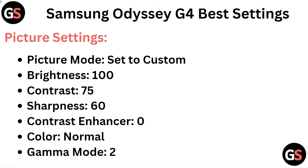Picture Settings: Picture Mode set to Custom. Brightness 100, Contrast 75, Sharpness 60, Contrast Enhancer 0, Color Normal, Gahan Mode 2.